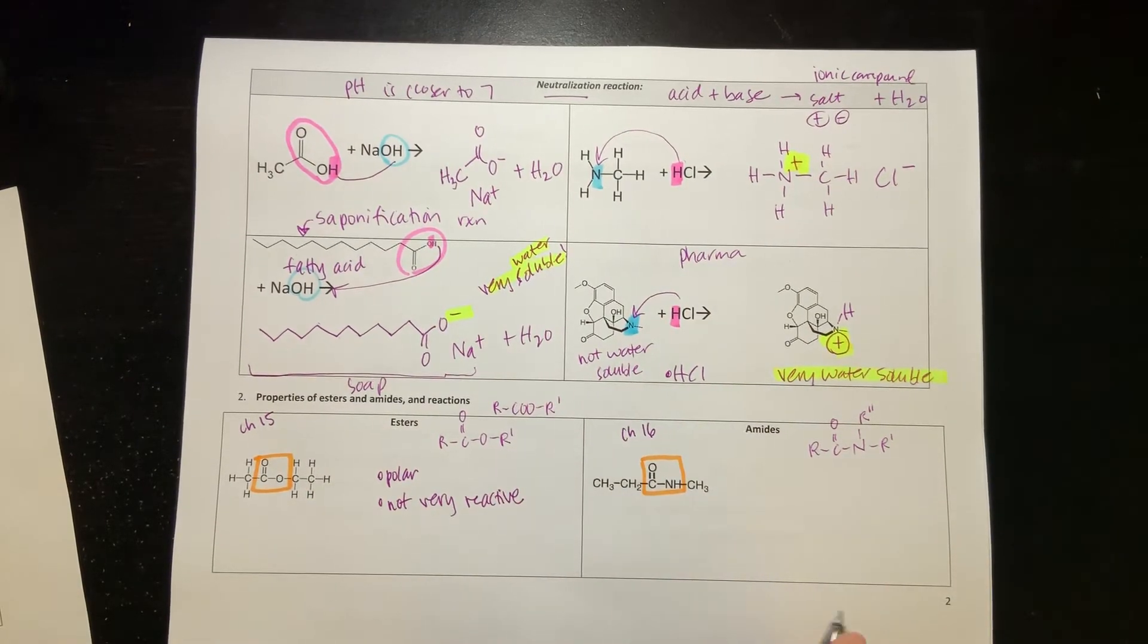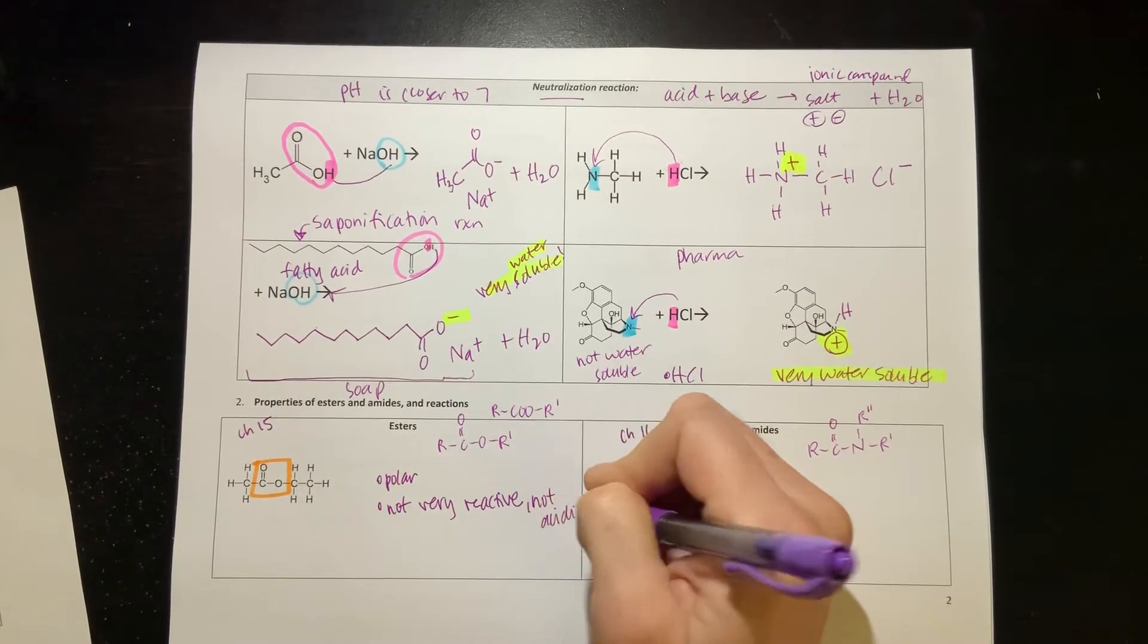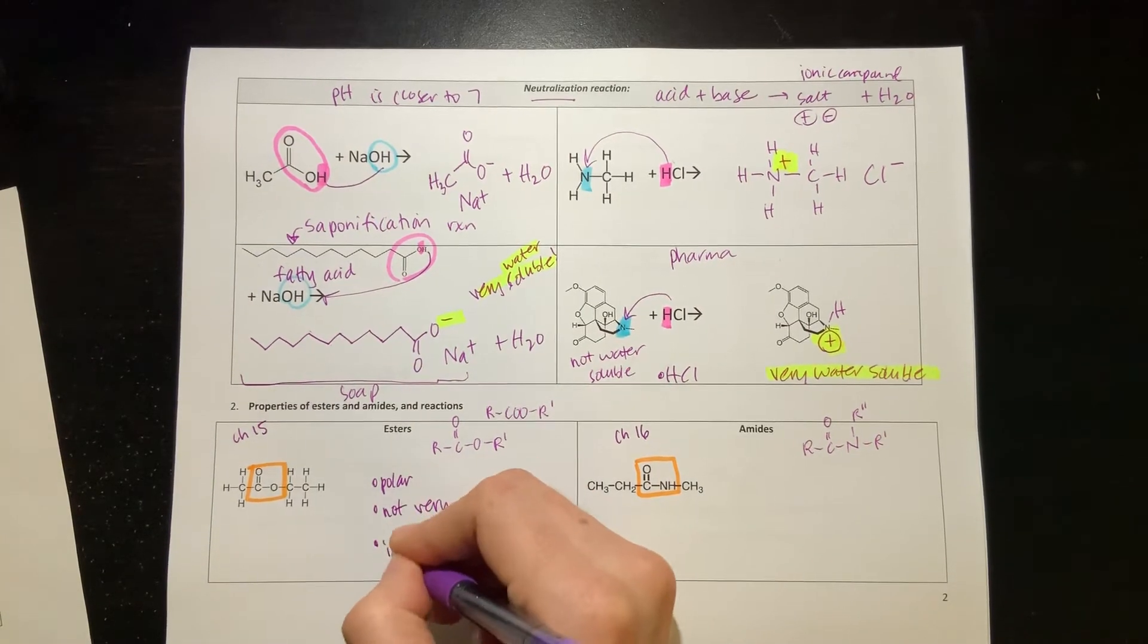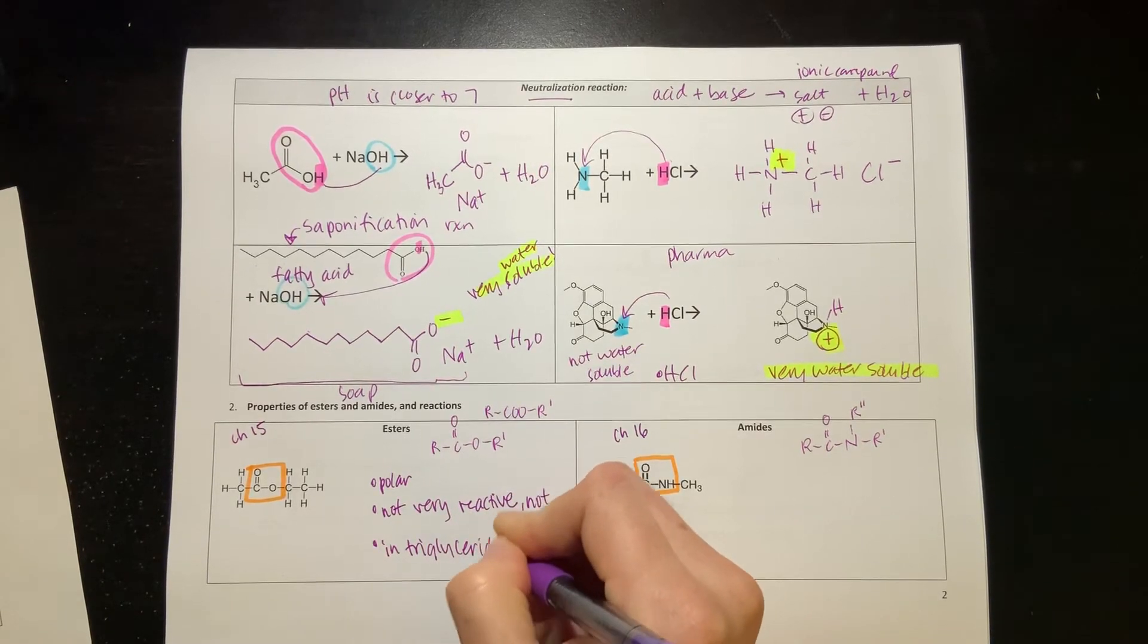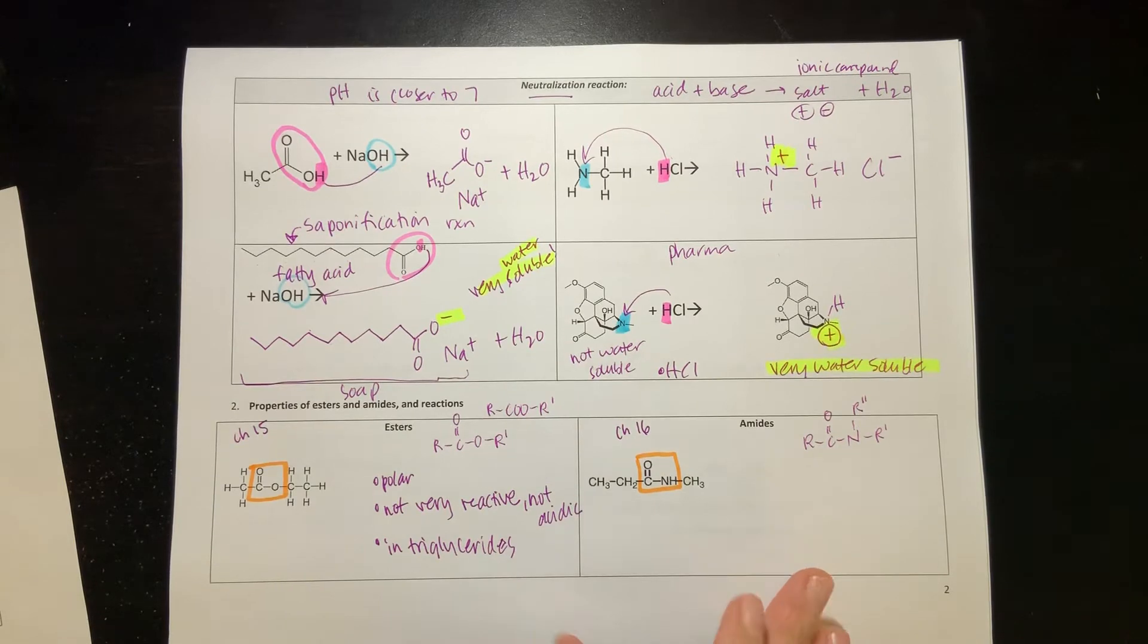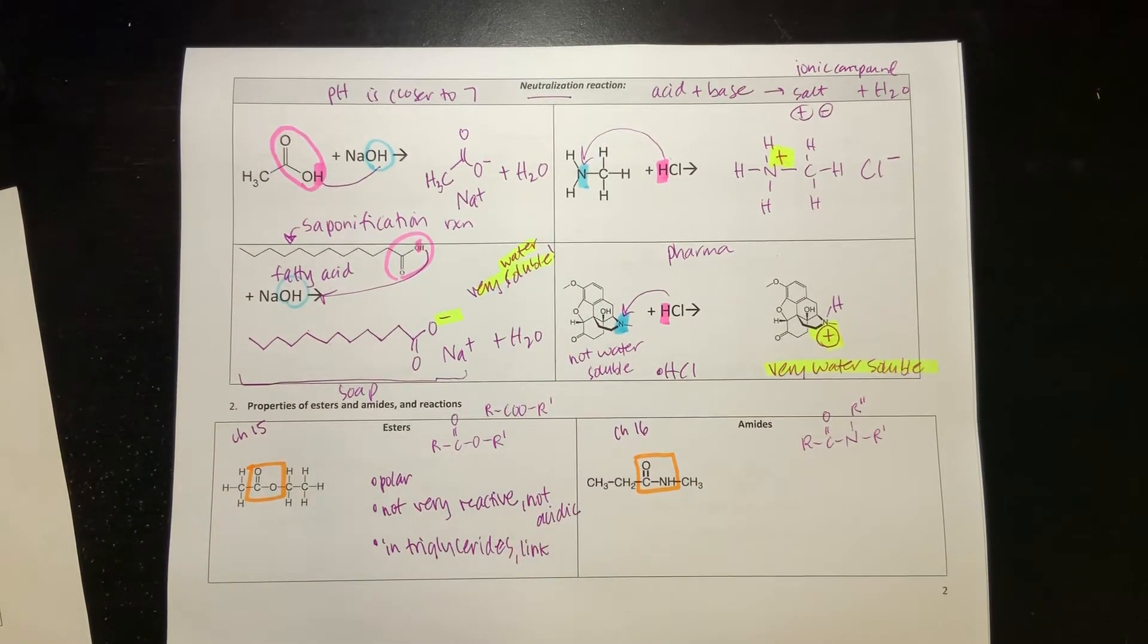Because this doesn't have that proton to donate, I would say that it's not acidic. The main place we're going to see these in chapter 15 is we're going to see that they show up in triglycerides. Those are the fats that you find in plants and animals. These are good links, and so these are going to link glycerols and fatty acids. They're going to link two parts of our triglycerides together.